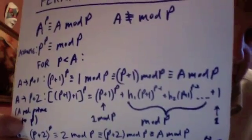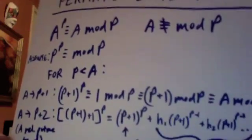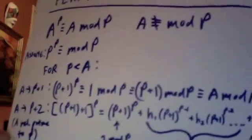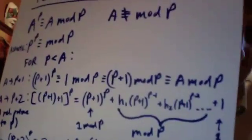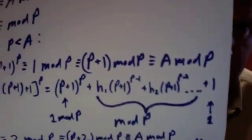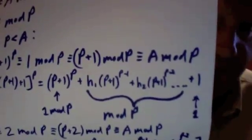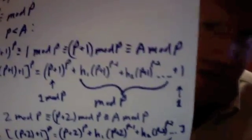Now let a be p + 2, again relatively prime to p. We can break it down: (p+2)^p = ((p+1)+1)^p, which equals (p+1)^p plus a sequence of terms h₁(p+1)^(p-1) + h₂(p+1)^(p-2) and so on all the way down to plus 1. I submit that the terms h₁(p+1)^(p-1) + h₂(p+1)^(p-2) all the way down to h_r times p are all equivalent to 0 mod p.